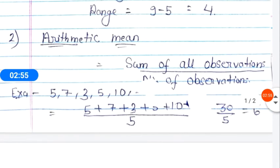So this is how we find the range. Now see, the second term is arithmetic mean. So let's see how we solve arithmetic mean. See, its formula is sum of all observations upon number of observations.